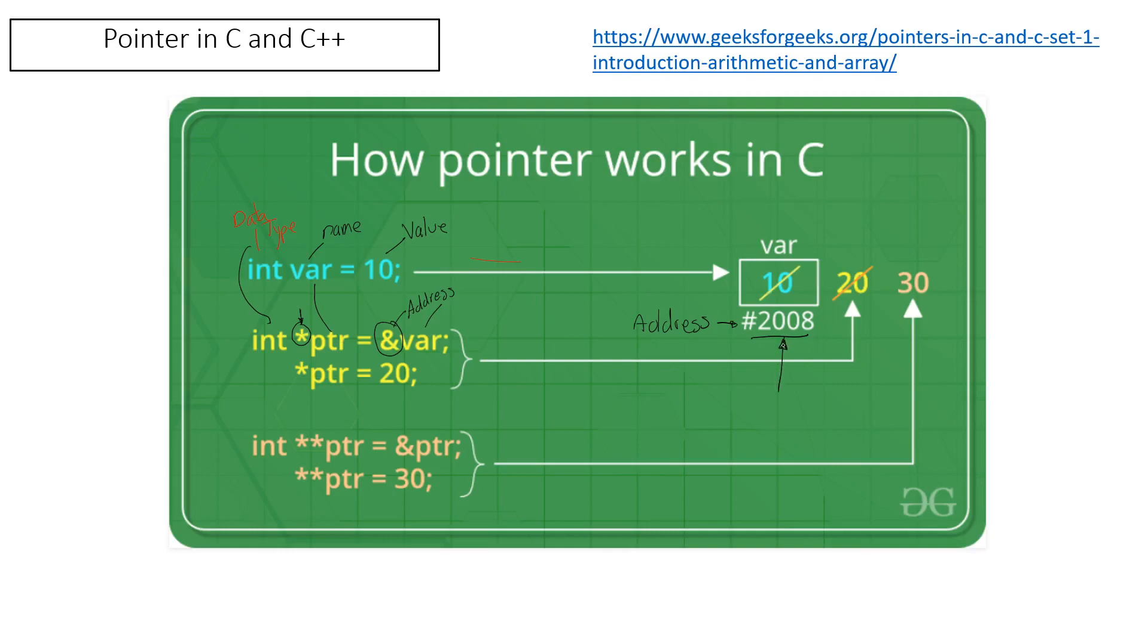After we assign the address, in this example now we're going to change the value to 20. So we go to the address 2008 and we assign the number 20. Now the variable is equal to 20 because we are changing the address. So now 10 disappears and it becomes 20 in the same memory allocation.